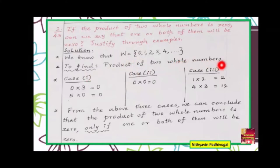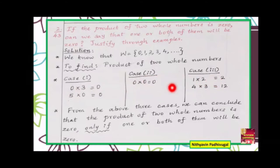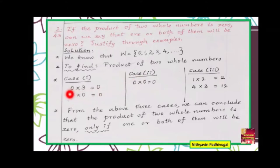We find the product of 2 whole numbers and have 3 cases. Case 1: at least 1 number is 0. Case 2: both numbers are 0. Case 3: no number is 0 (both are nonzero). In cases 1 and 2, we have 0 as a factor, and 0 multiplied by any number is 0. In case 2, both are 0, so 0 into 0 is equal to 0.